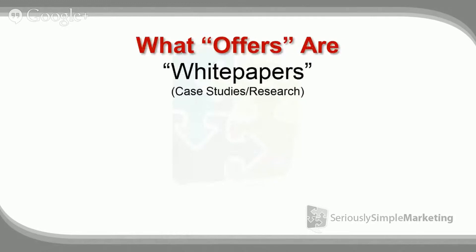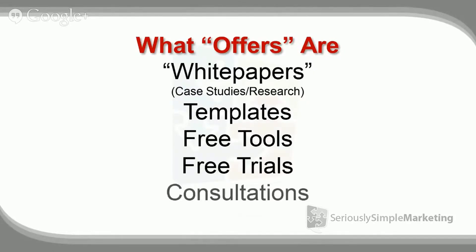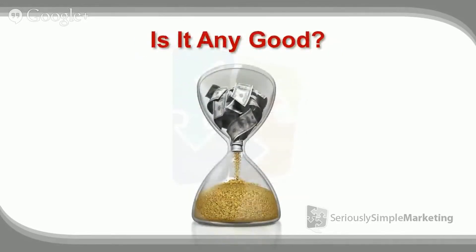There are other offers too: white papers, where you do case studies or research on a topic in your industry; templates — companies like HubSpot are incredibly good at this; free tools, either a resource list or tools you develop yourself; free trials for software-as-a-service products, like a seven-day or 14-day offer; consultations like a free 15-minute call or a 10-minute website review; and of course coupons and discounts. There are lots of different things to think about when considering what offer you could be giving.